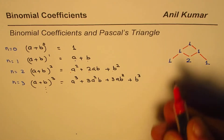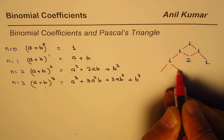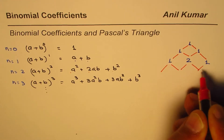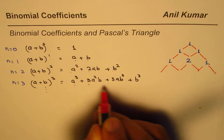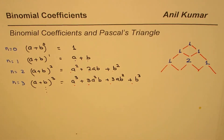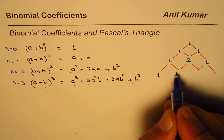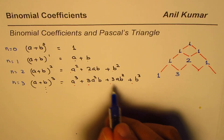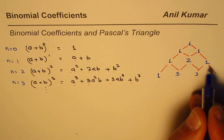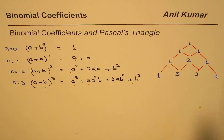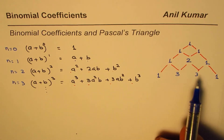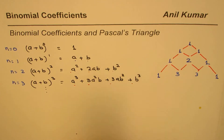If we extend this pattern as we did in Pascal's triangle, for n = 3 we get 1, then 3 (which is 1 + 2), then 3 again (which is 2 + 1), then 1. So the pattern being followed is similar to Pascal's triangle.